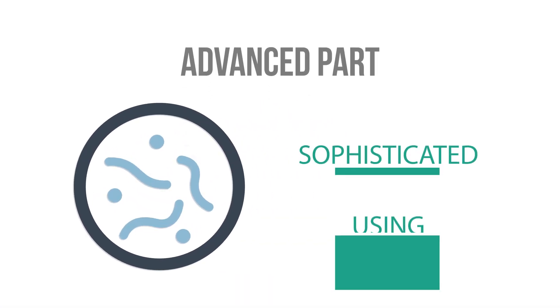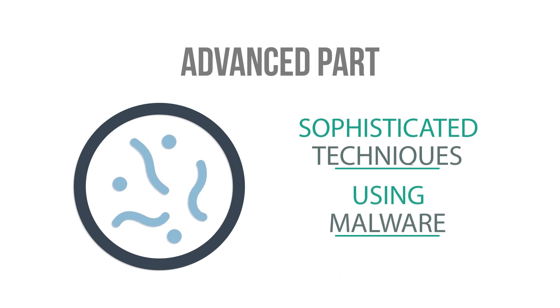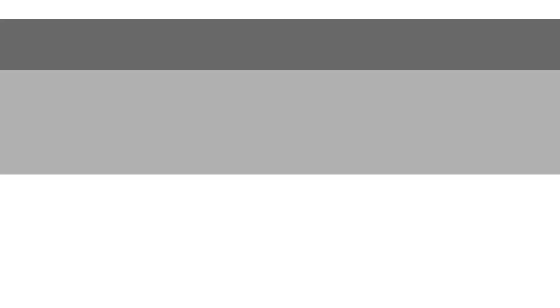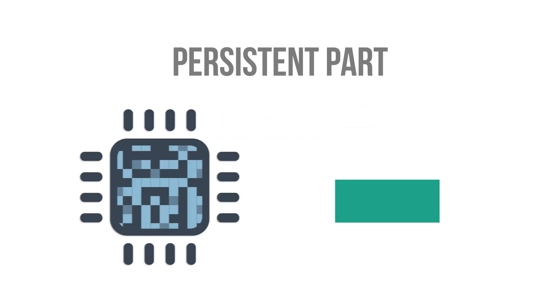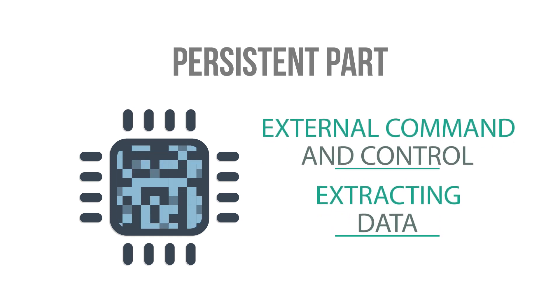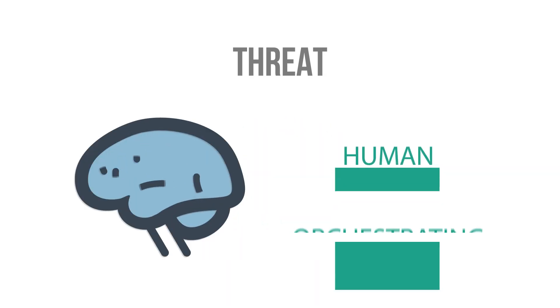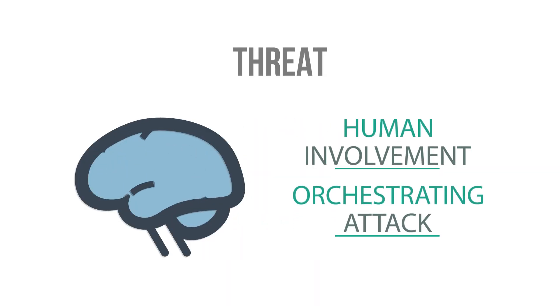The advanced part signifies sophisticated techniques using malware to exploit vulnerabilities in systems. The persistent part suggests that an external command and control system is continuously monitoring and extracting data from a specific target. The threat part indicates human involvement in orchestrating an attack.